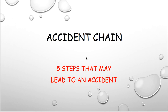So let's talk about the accident chain. This important concept helps you eliminate accidents or lower the risk of accidents. Accidents often happen because of a pattern of five elements known as the accident chain. These elements are the combination of a situation, an unsafe habit, an unsafe act, an accident, and the results from the accident.